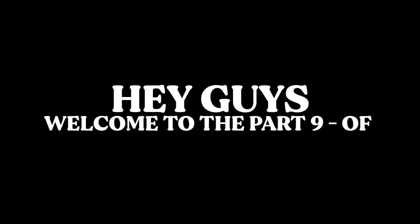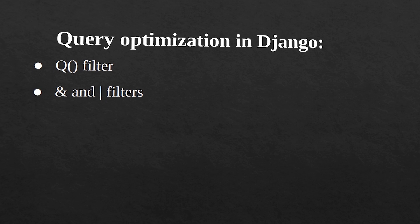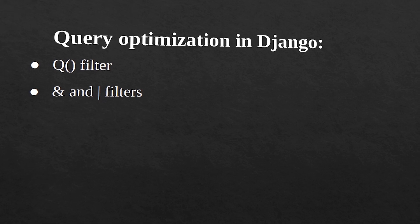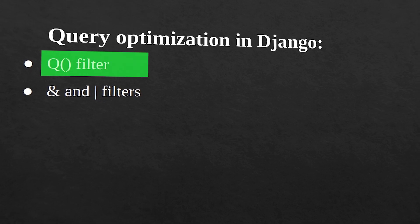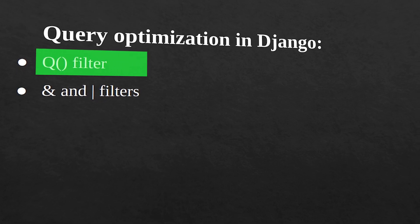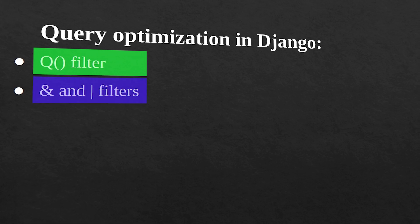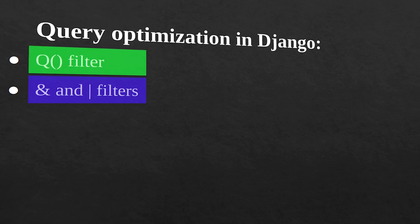Hey guys, welcome to Part 9 of the Django ORM series. In this video, we are going to learn a slightly advanced filtering technique called Q Filters — how to use them with AND and OR filters, and also negation. So let's get started.